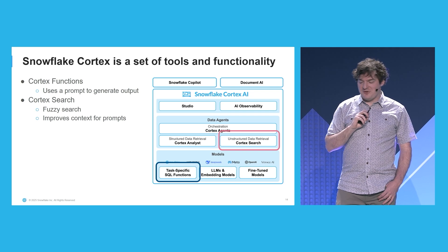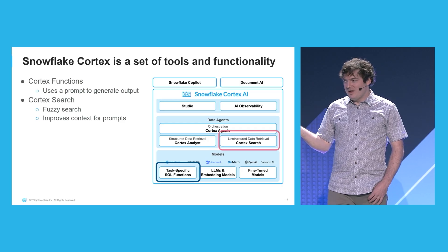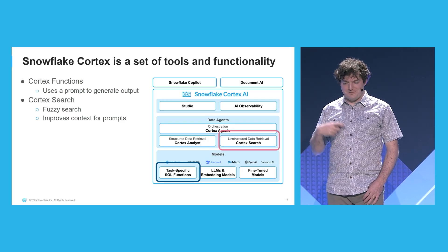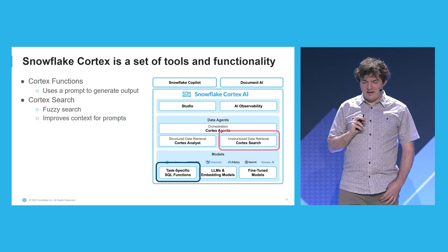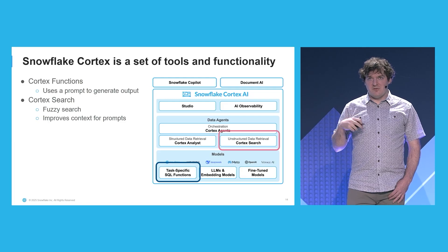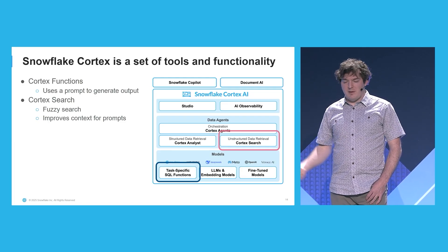I wanted to call out Cortex Search as kind of a slightly oddball in this conversation. This is a tool that allows for fuzzy searching — for the data scientists in the room, this is using vector embedding. The reason this is interesting and worth calling out is because that fuzzy searching is very useful for building that context. If you have a table that has a bunch of email data in a column, you can use a fuzzy search to go and get the ones that are relevant to what your user has asked for. Cortex Search is also just useful for fuzzy searching, but that's what makes it notable in this collection of GenAI tools.